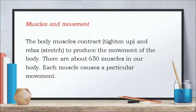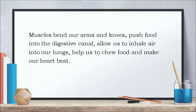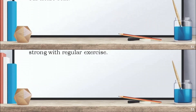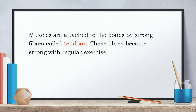Muscles produce movement in the body by contracting and relaxing. There are about 650 muscles in our body. Each muscle causes a particular movement. Muscles bend our arms and knees, push food into the digestive canal, allow us to inhale air into our lungs, help us to chew food and make our heart beat. Muscles are attached to the bones by strong fibers called tendons. These fibers become strong with regular exercise.